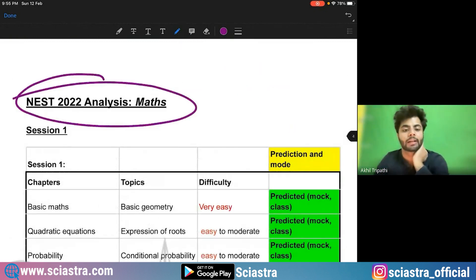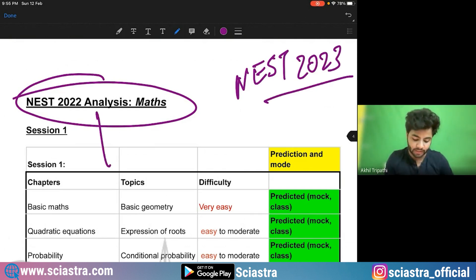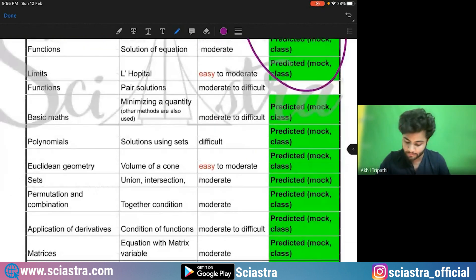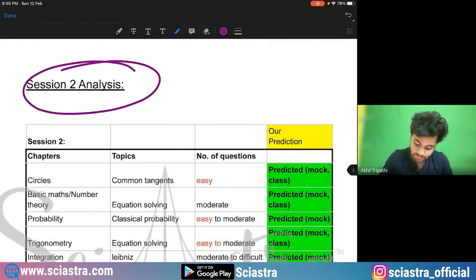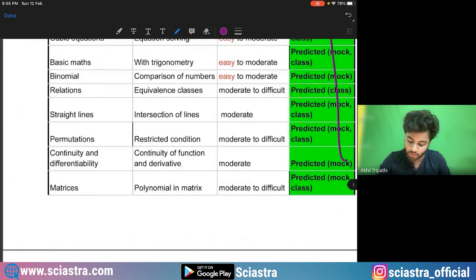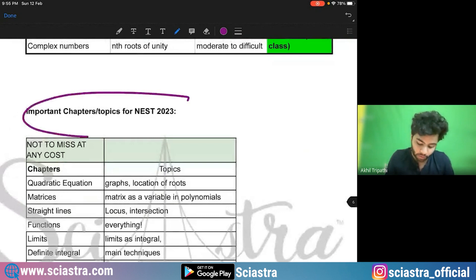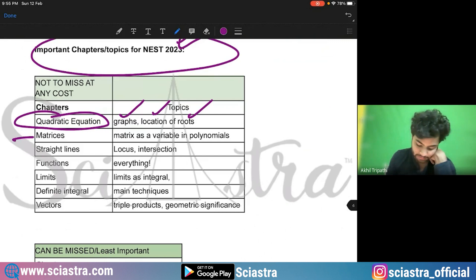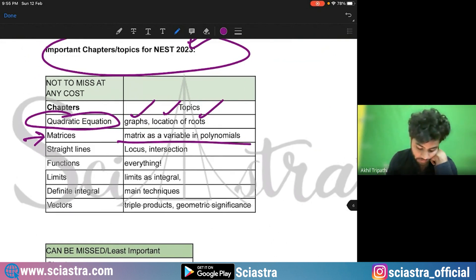Coming to NEST 2023 important chapters. I'll tell you, this is the analysis right now, which I have already told you 2022 analysis. I've already told you, see all of these things were already predicted by us last year. And this was the analysis for session two. All of these questions were already predicted for session two. Coming to the important topics and chapters that you should not miss for 2023. What are they? Quadratic equation, very, very important graph location and location of the roots. Then matrices, matrices as variable in polynomials, a straight line, locus and intersection of the curves. This is for NEST, not for IAT. IAT, I have already told you.